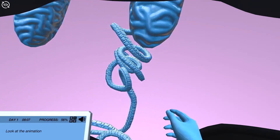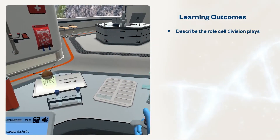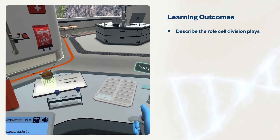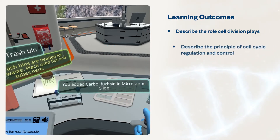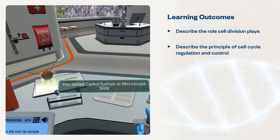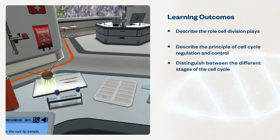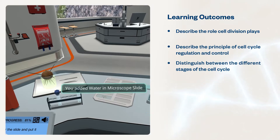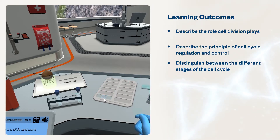These simulations will help students describe the role cell division plays in growth, tissue repair, and reproduction; describe the principle of cell cycle regulation and control; and distinguish between the different stages of the cell cycle — Interphase G1, S, and G2 — and Mitosis and Meiosis.